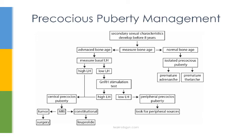Now let's talk about the management of a patient who comes in with precocious puberty. If a patient comes in younger than eight years old and you see they're developing some secondary sexual characteristics, the first thing you want to do is measure their bone age. The way to measure bone age is to take an x-ray of the wrist and compare the age of that bone with the patient's actual age. If bone age matches the patient's age, they have a normal bone age and what they have is isolated precocious puberty — either premature adrenarche or premature thelarche — and you simply observe them.